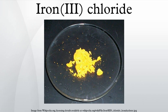The resulting brown, acidic, and corrosive solution is used as a flocculant in sewage treatment and drinking water production, and as an etchant for copper-based metals in printed circuit boards. Anhydrous iron chloride is a fairly strong Lewis acid, and it is used as a catalyst in organic synthesis.